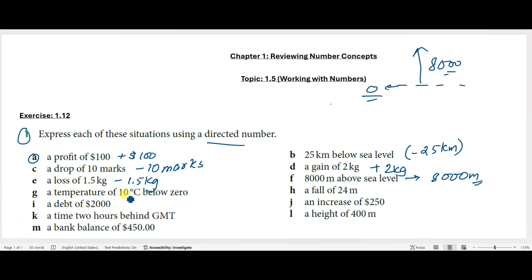Next, a temperature of 10 degrees centigrade below zero—that is going to be -10 degrees. Then a fall of 24 meters—fall means it's negative, so -24 meters.